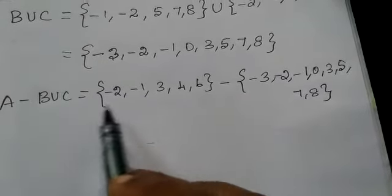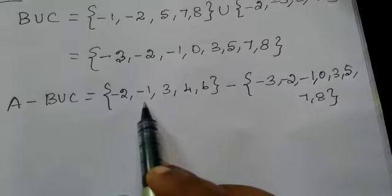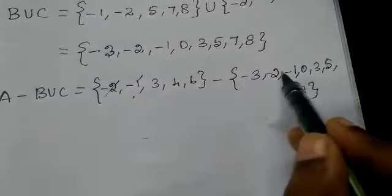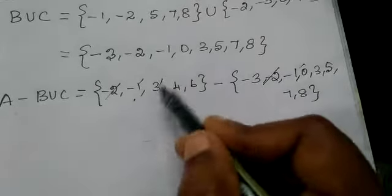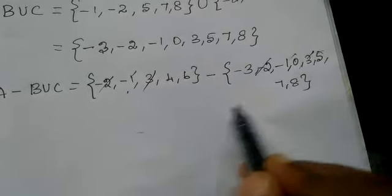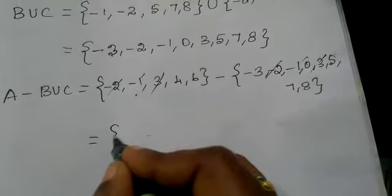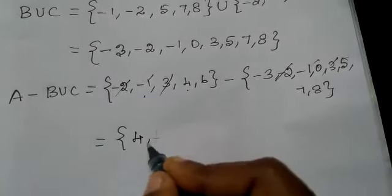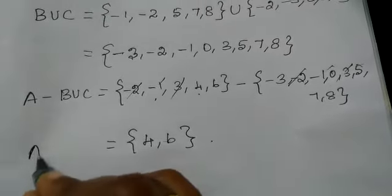Now the elements which are in A only we want to write. Now cancel the common elements: minus 2, minus 1, 3 cancel. Now what are the elements left in A? A difference, 4, 6. This is the answer.